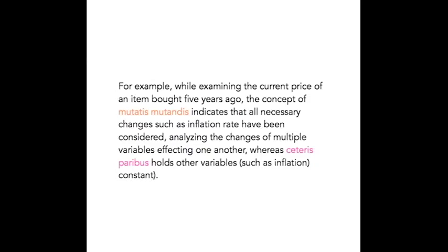For example, while examining the current price of an item bought five years ago, the concept of mutatis mutandis indicates that all necessary changes, such as inflation rate, have been considered, analyzing the changes of multiple variables affecting one another. Whereas, Ceteris Paribus holds other variables, such as inflation, constant.